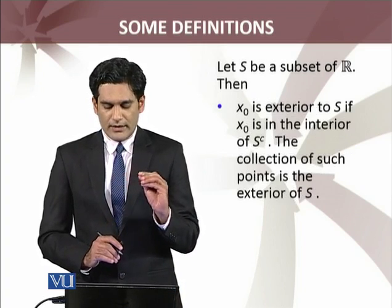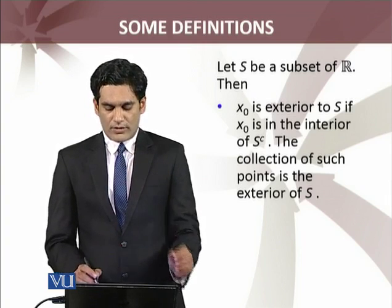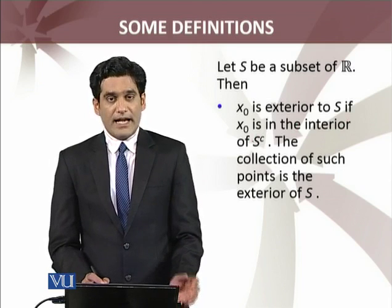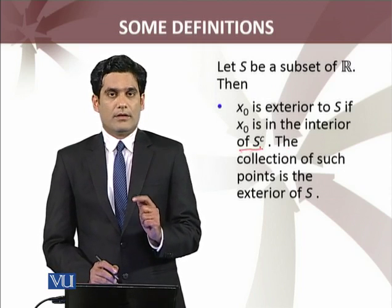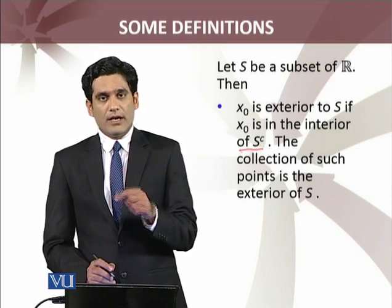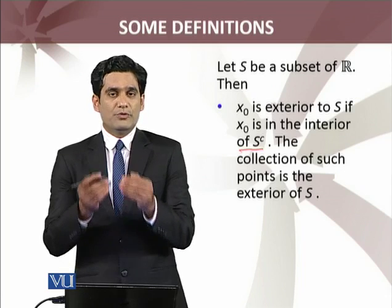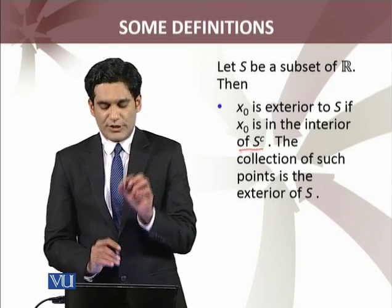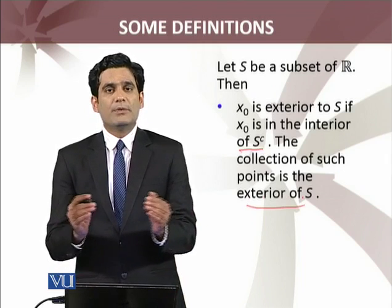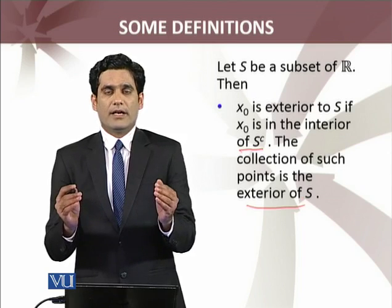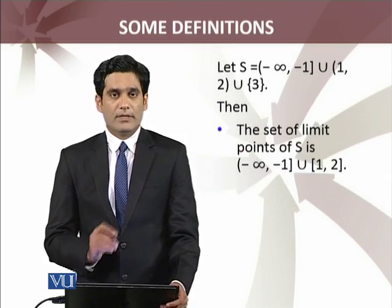Let S be a subset of the real numbers R. Then X₀ is an exterior point of S if X₀ is an interior point of its complement, i.e., the complement of S. The collection of all such points is called the exterior of S. यानि X₀ exterior point होगा अगर वो S-complement का interior point हो।